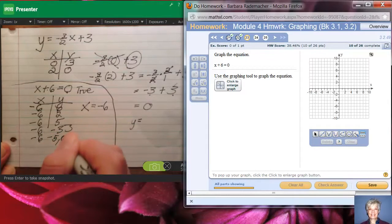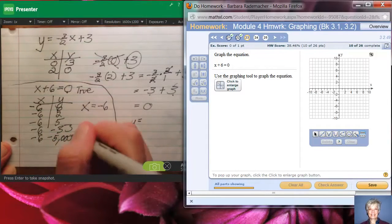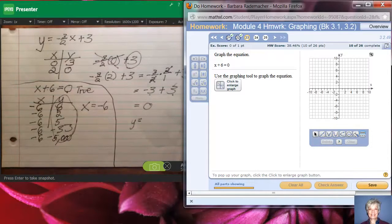Negative 5,000, oh my goodness, you can choose any old numbers you want for Y. X is going to be negative 6.